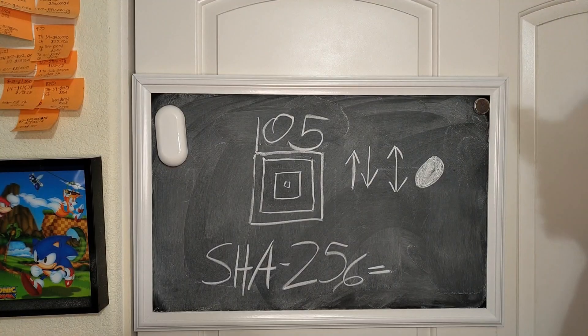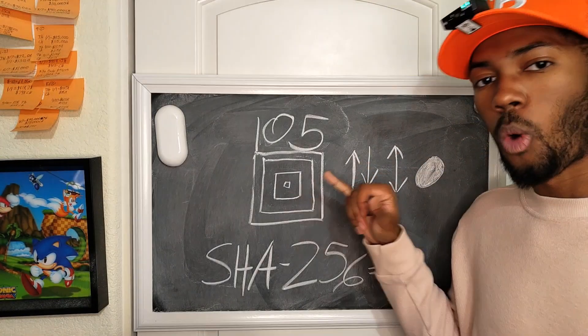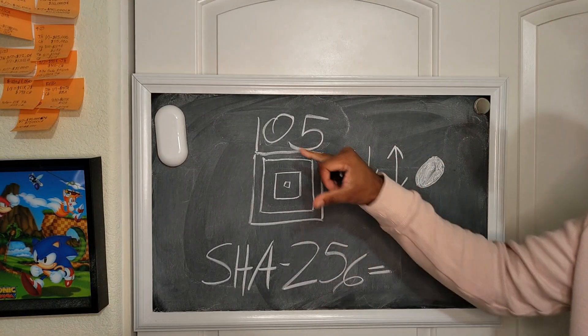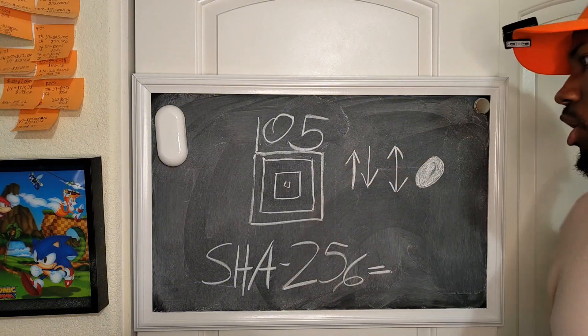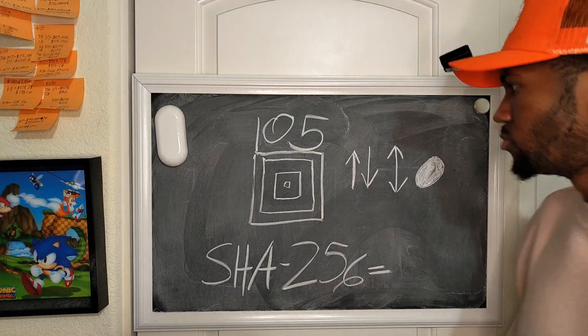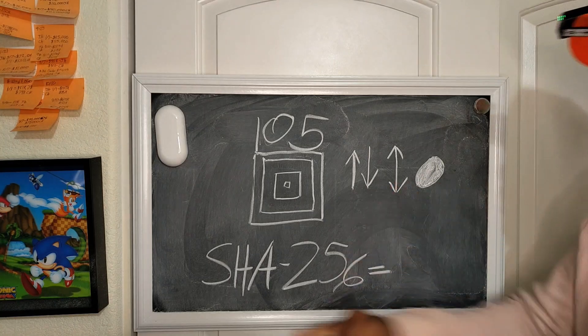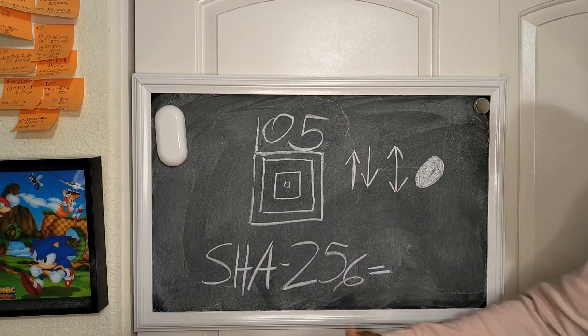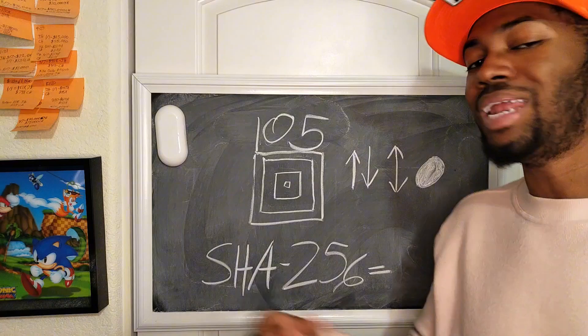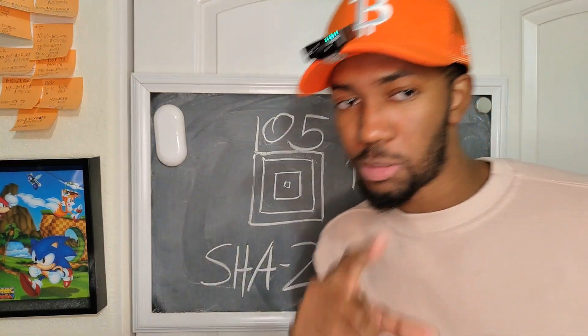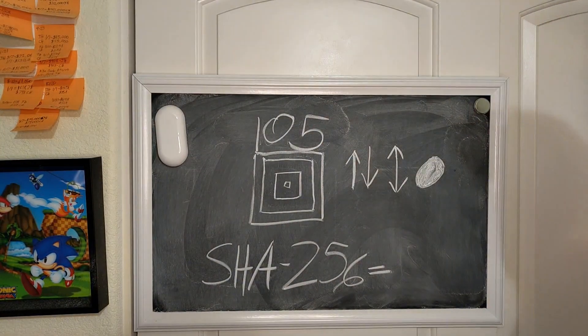Today we're going over whether or not Google's Willow quantum computer chip with 105 qubits worth of physical processing power is able to destroy the SHA-256 algorithm which backs and protects Bitcoin, amongst many other things in the real world. Let's go over it today.